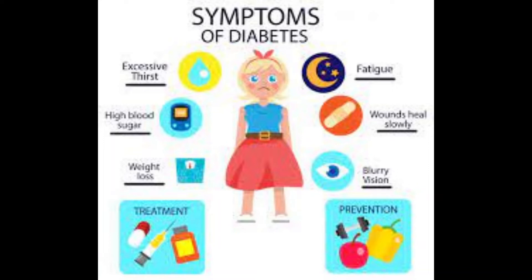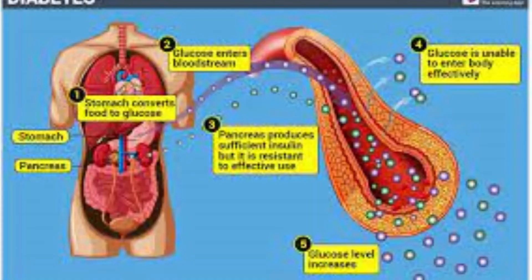Pre-diabetes, type 2 diabetes, and gestational diabetes are more common in people who are overweight. Long-term complications of diabetes develop gradually. The longer you have diabetes and the less controlled your blood sugar, the higher the risk of complications.